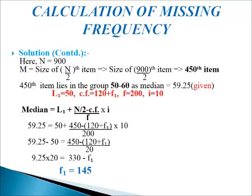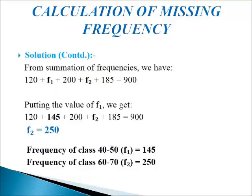By calculating, we get F1 equals 145. Now, from the summation of all frequencies: 120 plus F1 plus 200 plus F2 plus 185 equals 900. Substituting F1 equals 145: 120 plus 145 plus 200 plus F2 plus 185 equals 900. After calculating mathematically, we get F2 equals 250. So the frequency of class interval 40 to 50 is 145, and the frequency of class interval 60 to 70 is 250. This is how we calculate missing frequencies using median.